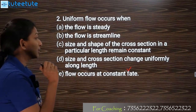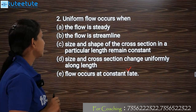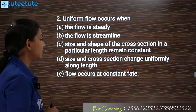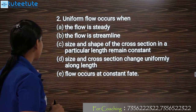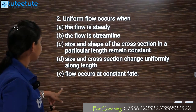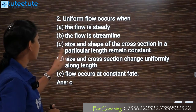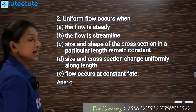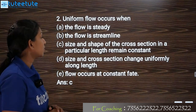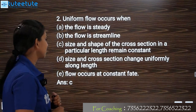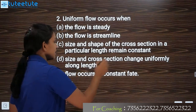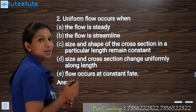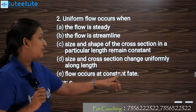That is correct — size and shape of the cross-section in a particular length remains constant. So that is correct. But option C is the correct answer: size and cross-section changes uniformly along length.